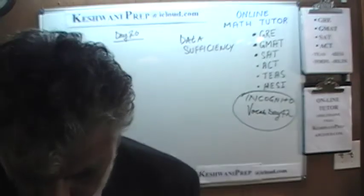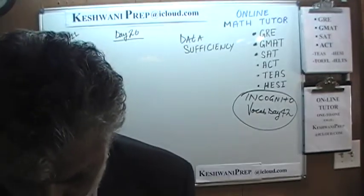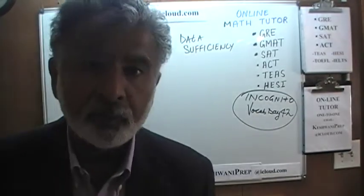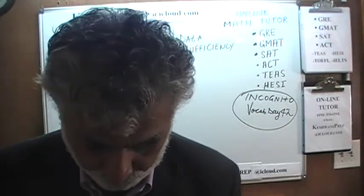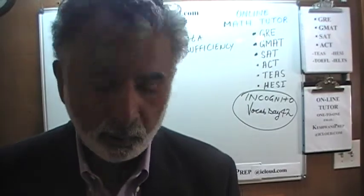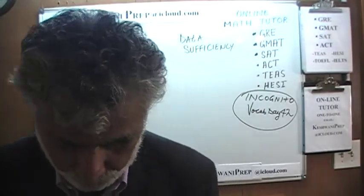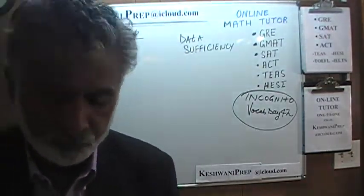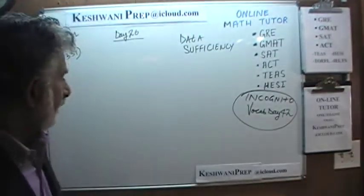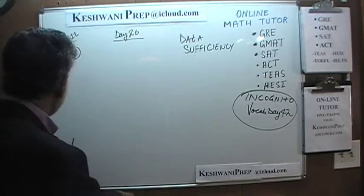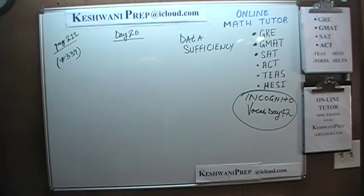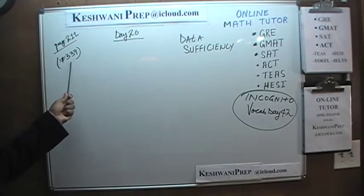Today we will solve some data sufficiency problems that you will find on page 211. Turn to it, make sure the book is in front of you — turn to page 211. The very first one you see there is number 339.